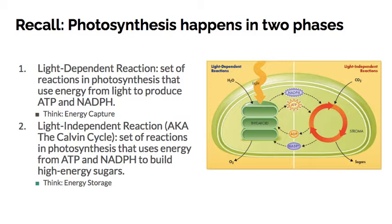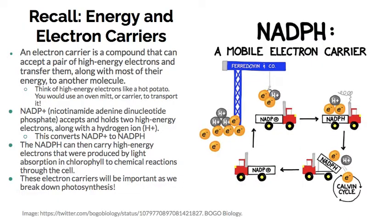Photosynthesis happens in two phases. You had the light-dependent reaction and the light-independent reaction. The light-dependent was energy capture, and the light-independent was energy storage. And then energy and electron carriers — from Unit 1, this NADPH was our electron carrier. NADP+ would pick up some electrons and a hydrogen ion, then be converted to NADPH once it gained those molecules. It would go and drop those off in the Calvin cycle and then go back and be ready to pick up more.